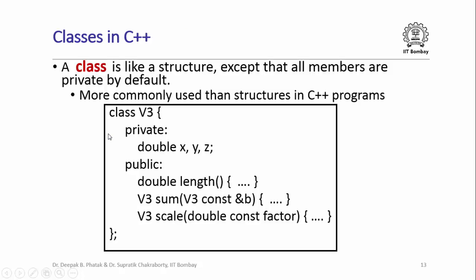Now that you know how to declare some members as private and some as public, it is appropriate to note that in C++ we also have a construct called class, which is very similar to a structure except that all members of a class are private by default, just as all members of a structure are public by default. In C++ programs you will more often encounter classes than structures in general. Here is the same three dimensional vector structure now written as a class: it has the same three data members which are now private, and the same three member functions which are declared as public.